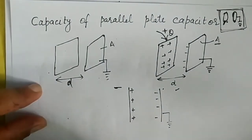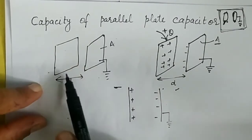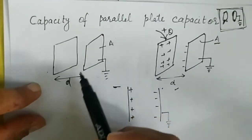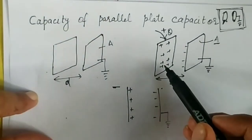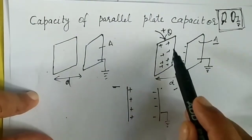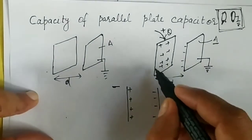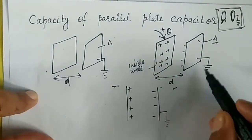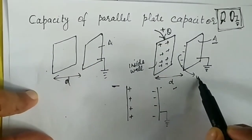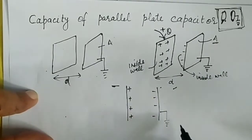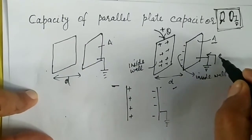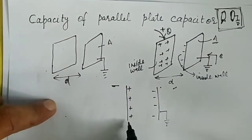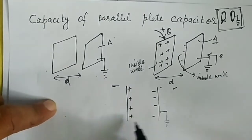A parallel plate capacitor consists of two plates where one is earthed. Let A be the area of cross-section of the plates and D be the separation between the plates. When charge Q is given to one plate, positive charge distributes uniformly on the inside wall of that conductor. Due to polarization, negative charge accumulates on the inside wall of the earthed plate, and the positive charge is neutralized by supplying electrons from the earth.